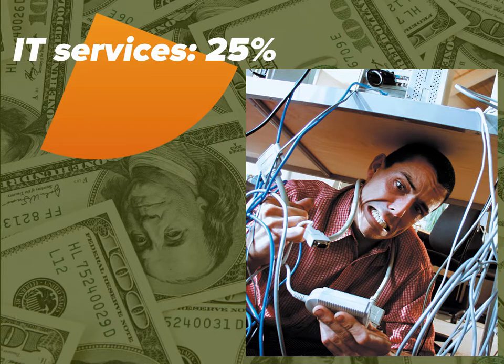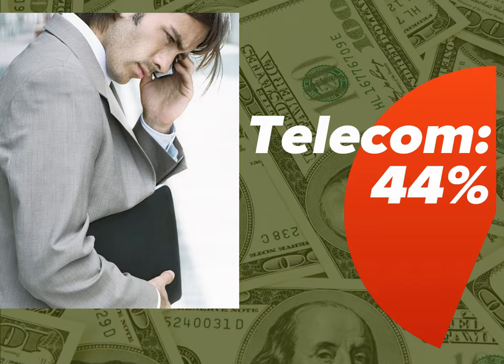A quarter of the IT budget goes to IT services — the hard-working department charged with the sacred task of keeping our desktops, laptops, servers, and even our cloud infrastructure running smoothly, or some approximation thereof. And finally, at 44% of the IT budget, there's telecom. That's right, telecom is the biggest IT expense.